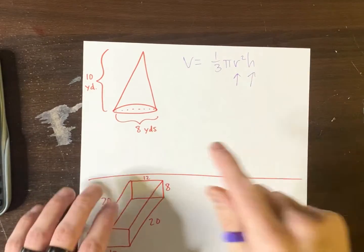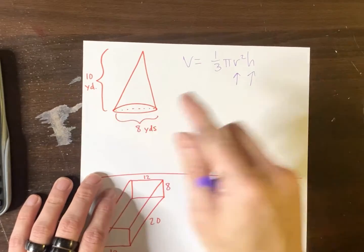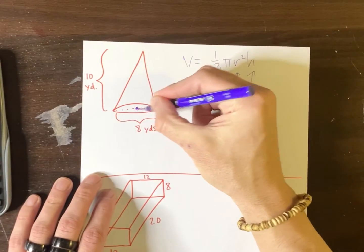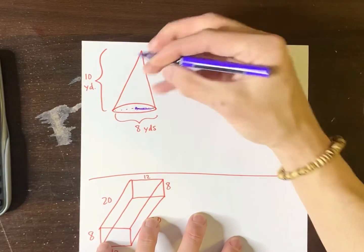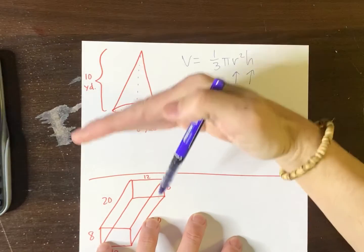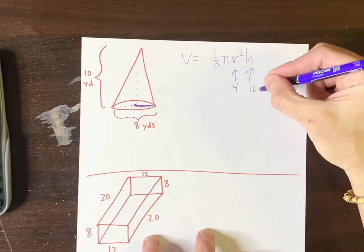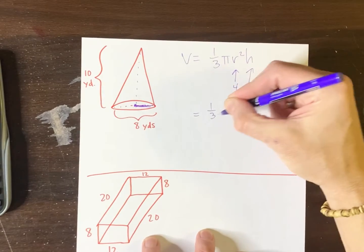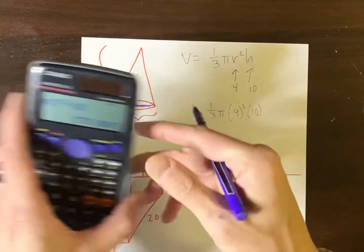So let's identify the key players. I need r. Well, here's the circle. They're saying eight is the whole thing. So of course, the radius would just be half of that, which is four. h is the height. Sometimes they call it the altitude. It's how tall this cone stands above the ground. In this case, 10 yards. So we got one-third pi, four squared times 10.